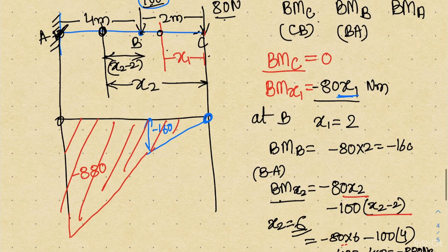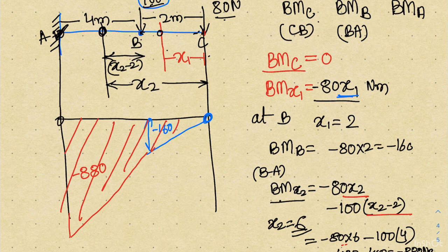That is how to complete the bending moment diagram for a cantilever beam with two point loads. For multiple point loads, simply write the equation and calculate the bending moment values. With these two problems I am closing this session. I believe you now have a basic understanding of shear force and bending moment. In the next class we will consider one or two more examples before moving to the problem of uniformly distributed load. Thank you for watching.